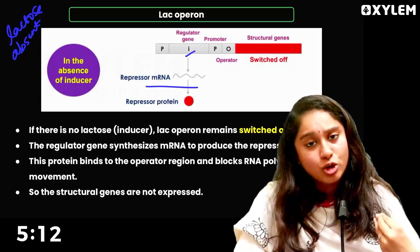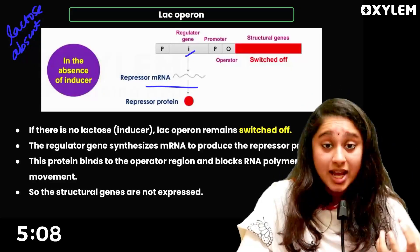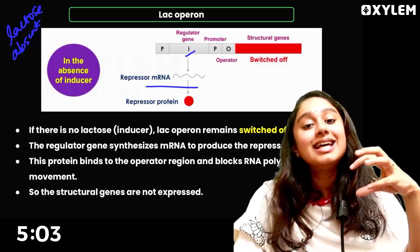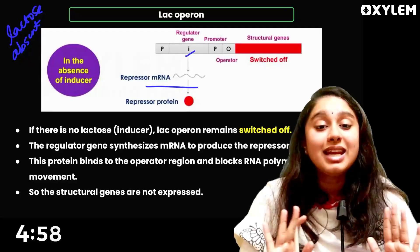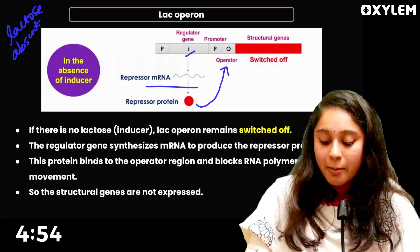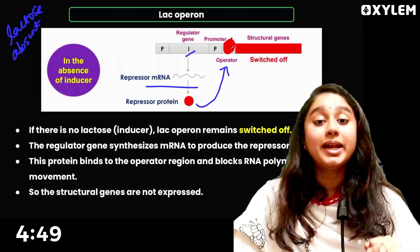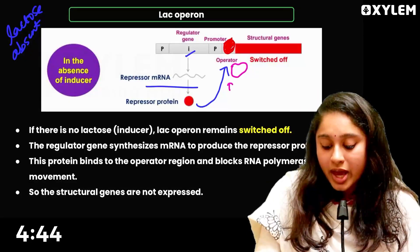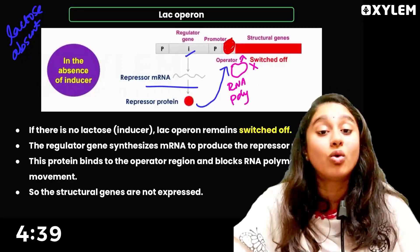If there is no lactose, the regulatory gene produces mRNA, which translates into a repressor protein. This repressor protein will go to the operator region and bind to it, blocking RNA polymerase from sitting on the promoter. So there is no transcription and no enzyme produced.